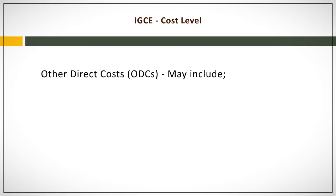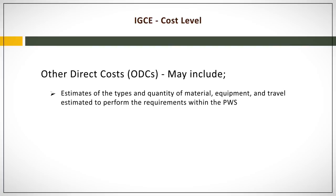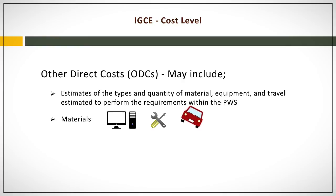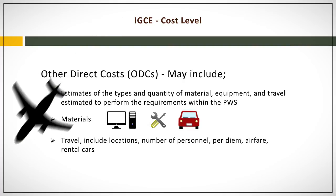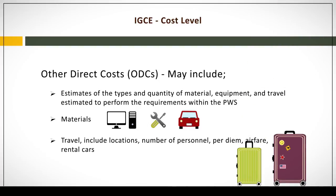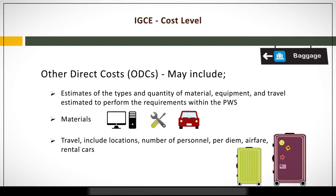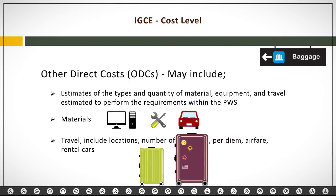The other direct cost, or ODC category, may include estimates of the types and quantity of material, equipment, and travel estimated to perform the requirements within the PWS. Materials used in direct support of the contract, such as computers, lease of equipment, and vehicles, may also be included within the ODC category. The IGCE preparer must provide documentation on all estimates and how they were obtained. When considering travel, documentation must also be provided on the number of trips by locations, number of personnel, per diem, airfare, rental cars, and so on.